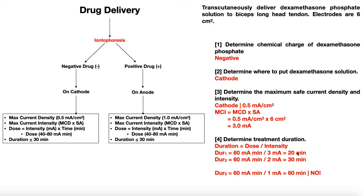There are other valid options. Keeping the dose at 60 milliamp-minutes, using 2 mA gives 30 minutes — still valid, as 2 mA is under the 3 mA maximum and 30 minutes meets the duration limit. However, using 1 mA would require 60 minutes, which exceeds the 30-minute maximum — so that treatment is not valid. Only the first two options — 3 mA for 20 minutes or 2 mA for 30 minutes — are valid treatments.